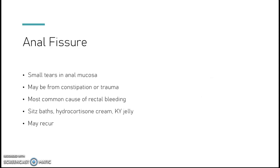Anal fissures are small tears in the anal mucosa, caused by constipation or trauma. They are the most common cause of rectal bleeding. Treatment includes Sitz baths, hydrocortisone cream, and KY jelly. They can be recurrent — something that happens over and over again.